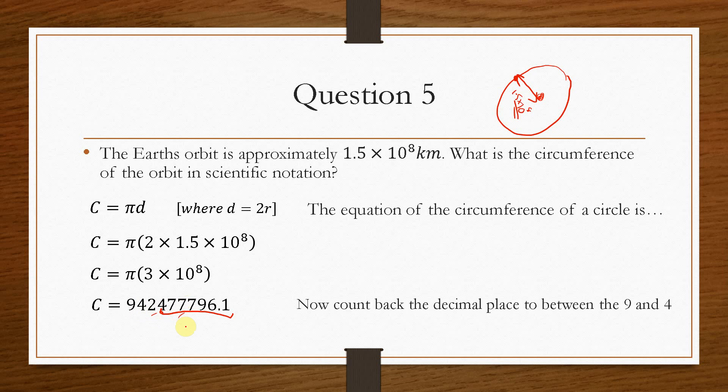So what we'll do is we'll count back from this decimal point between the 9 and the 4. Again, you could do it between this 4 and this 2, but we're staying consistent and we're going between the 9 and the 4. So what that will tell us is that, let's just double check, so we'll go 1, 2, 3, 4, 5, 6, 7 and 8. So that tells us that the circumference of the Earth's orbit is 9.4 times 10 to the 8 kilometres. And that is a lot easier to write and interpret rather than seeing this big number here. So you can see the power of scientific notation, especially when the numbers get either incredibly large or incredibly small.